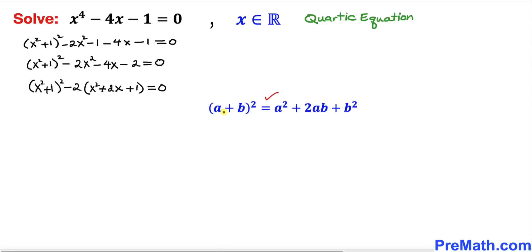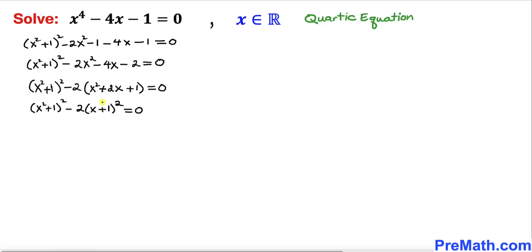Let's recall the (a + b)² identity once again and apply it to x² + 2x + 1, which can be written as (x + 1)². Moving this factored term to the right-hand side, we get: (x² + 1)² = 2(x + 1)².